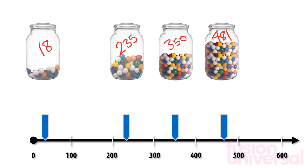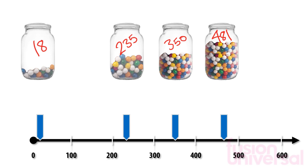We look at each jar in turn and decide which mark on the number line it is closer to. 18 is closer to 0 than it is to 100, so we round it down to 0.